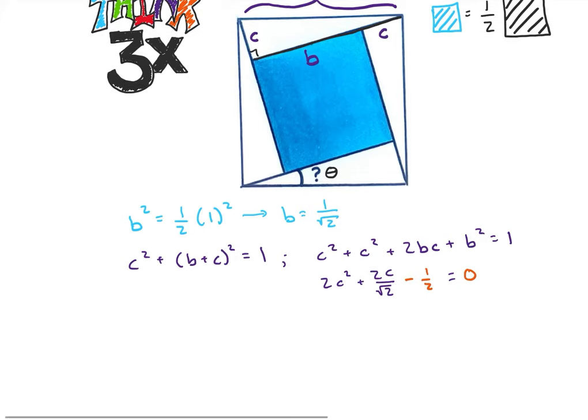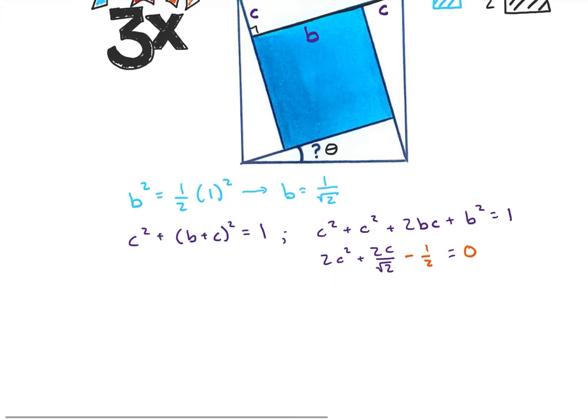Okay, now I can use the quadratic formula. So let's go ahead and do that. So I'm going to have that C is equal to negative B. So negative two over square root of two, which is just negative square root of two, plus or minus the square root of B squared, which will end up being two, minus four AC. So four AC, that's four times two times negative one half. So that's four. That's going to be plus divided by two times A, which is going to give us four.